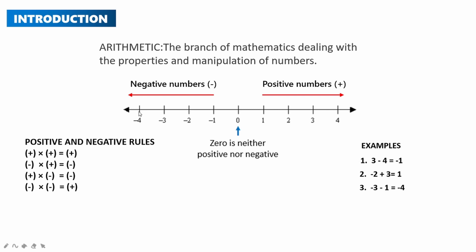The third example is minus 3 minus 1. Starting at minus 3, minus means you move to the left once, so your answer is minus 4. The fourth example is minus 2 plus minus 2. From the rules, positive times negative equals negative, so this becomes minus 2 minus 2, which equals minus 4.